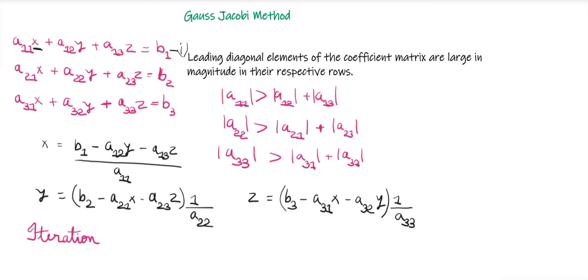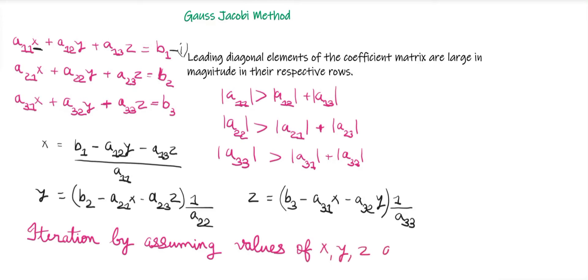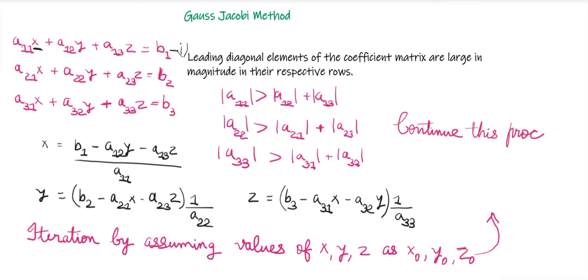We start with the first iteration by assuming x, y, and z are equal to x₀, y₀, and z₀ respectively — this is our initial approximation. From this approximation we find x1, y1, and z1 by placing x₀, y₀, z₀ into the three equations written in x, y, z form. We continue this process until two successive approximations are nearly equal.